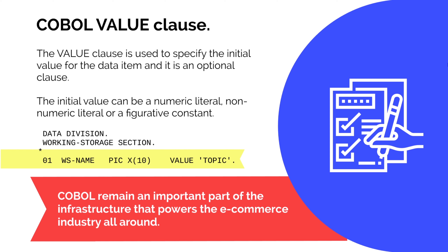The COBOL value clause is used to specify the initial value for a data item. It is optional and depends on the programmer. If you want to assign a default value to a variable when defining it in the working storage section, you use the value clause. You can assign numeric, non-numeric, or figurative constants. For example, variable WS-NAME with picture clause X(10) and value clause 'TOPIC' — here X is alphanumeric with a size of 10, and the initial value is assigned as 'TOPIC'.